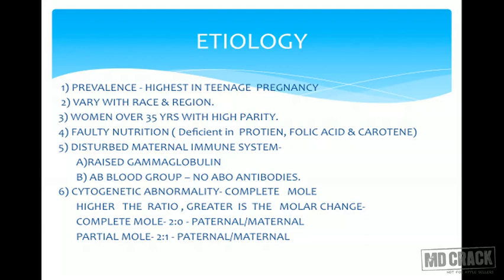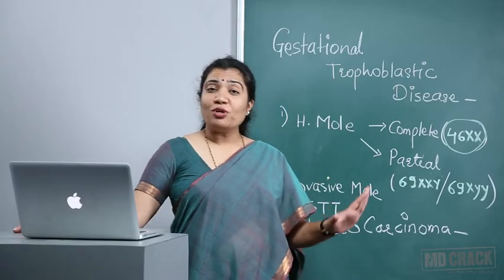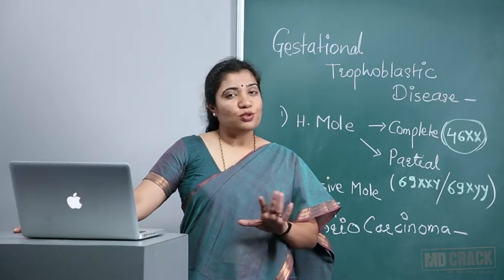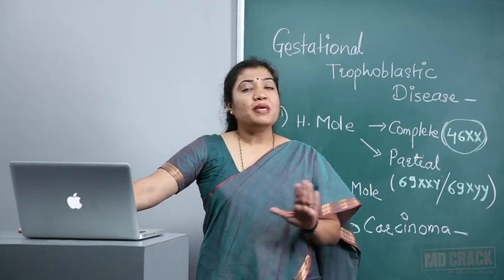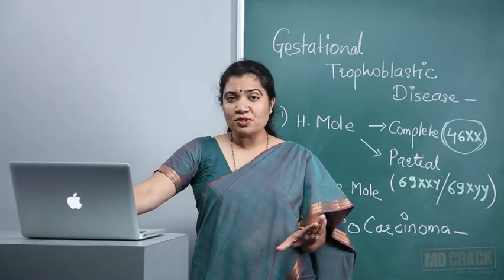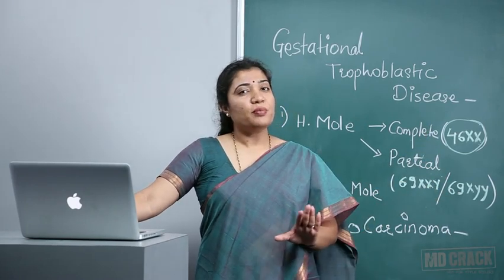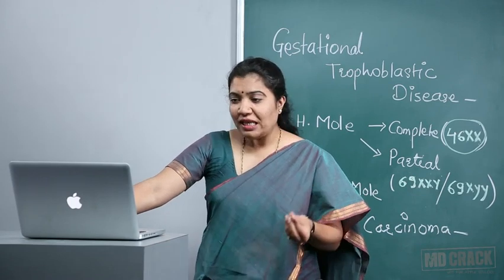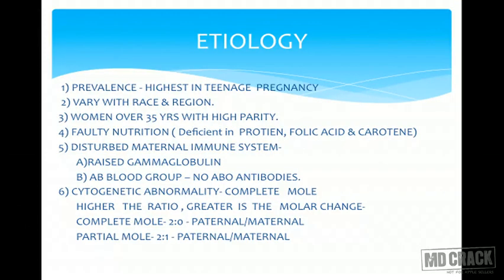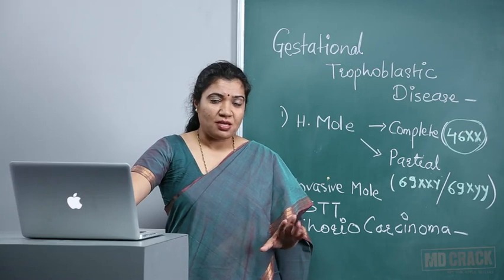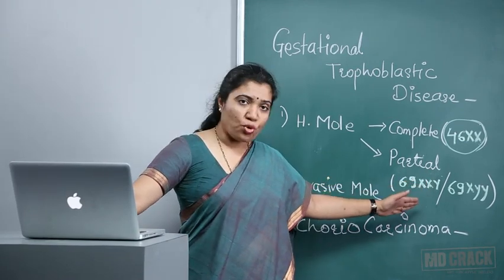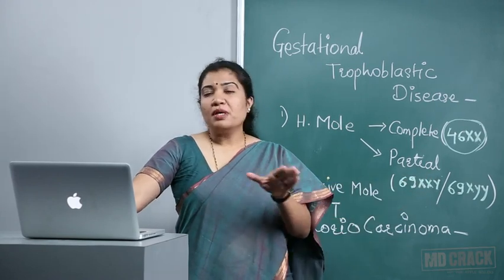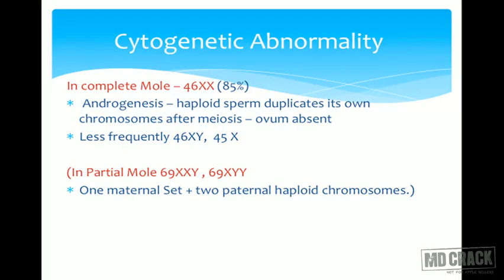In complete mole the ratio of paternal to maternal chromosomes is 2:0 — paternal chromosomes are present but maternal chromosomes are absent. This tells us the importance of a mother: if maternal chromosomes are absent, no baby can be formed, only a mole. In partial mole, the ratio is 2:1 — two paternal and one maternal — causing triploidy, leading to partial mole where some fetal tissue may be present.